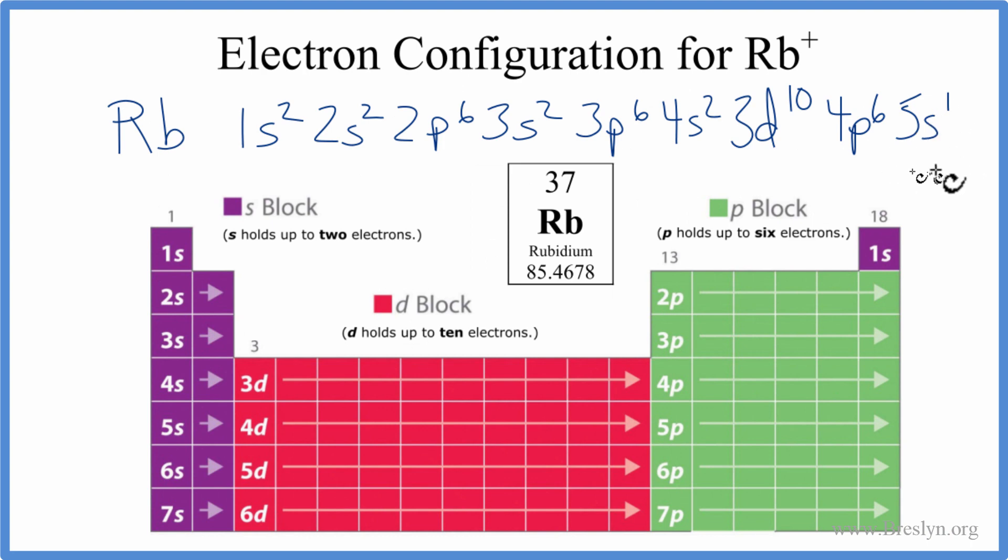Because this 5 is the highest energy level, and there's only one electron, we could say that rubidium only has one valence electron, just like all the elements in this first group here.